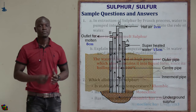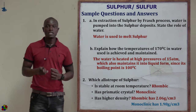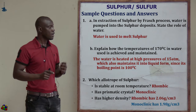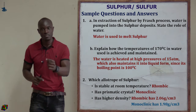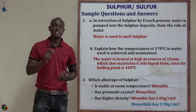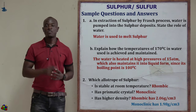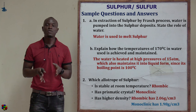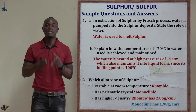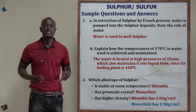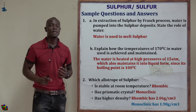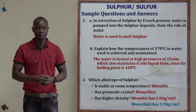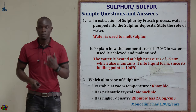The next question asks: explain how the temperature of 170 degrees Celsius is achieved and maintained. The water is heated under very high pressure of 10 to 15 atmospheres. That high pressure maintains the temperature between the different molecules of water — the very high pressure is what maintains that temperature.